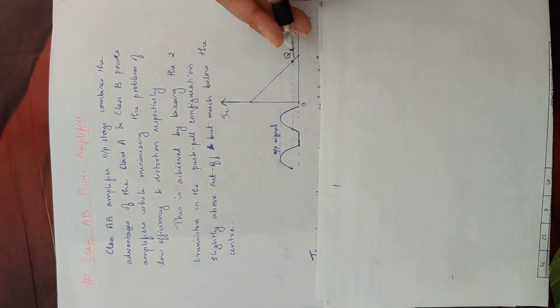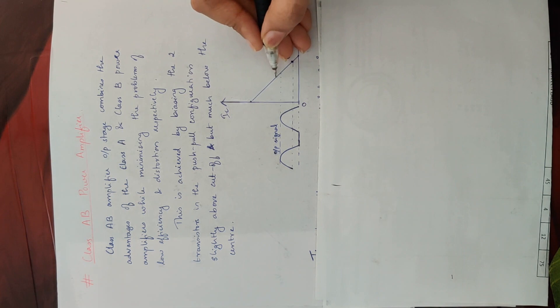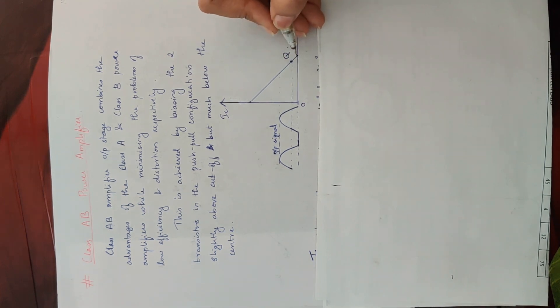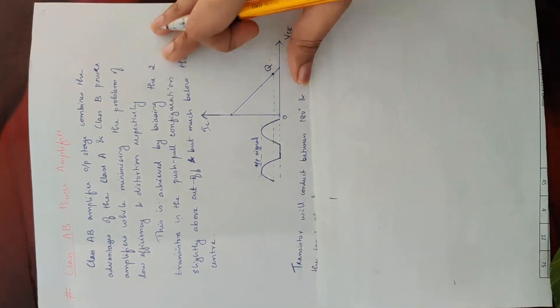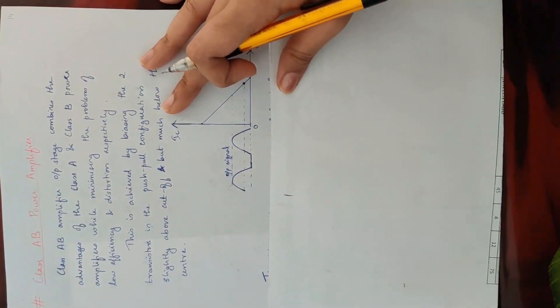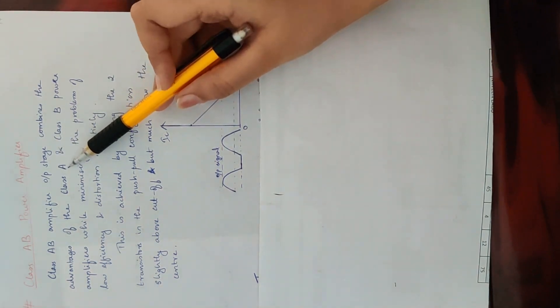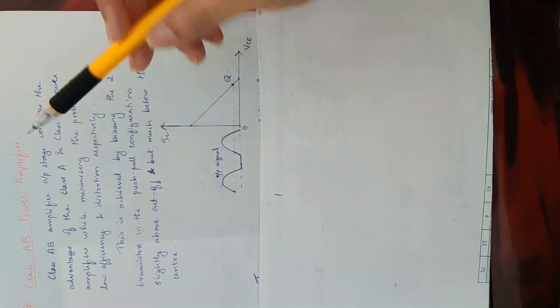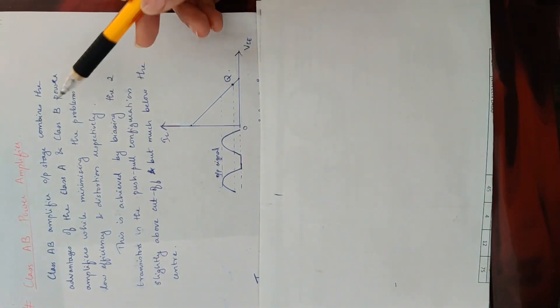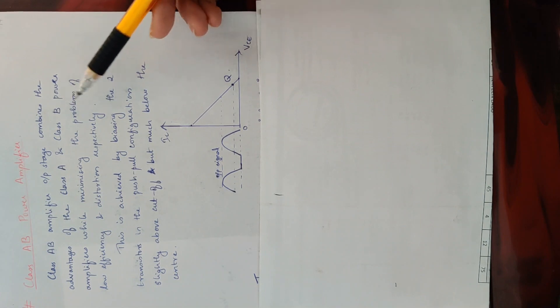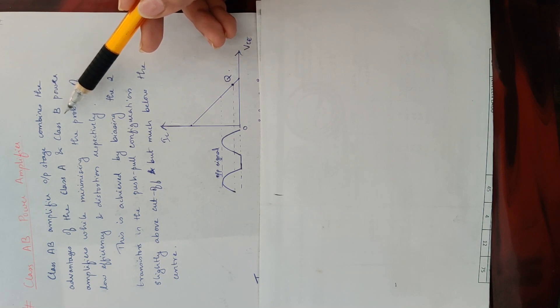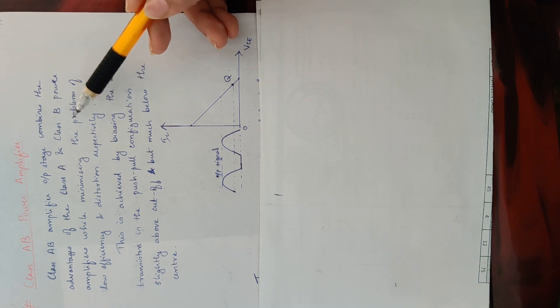In Class A, we fix the biasing at the center. The Class A amplifier conducts for the full input cycle from 0 to 360 degrees. In Class B, we use the push-pull configuration. The conduction angle in Class B is 180 degrees — only the half cycle.